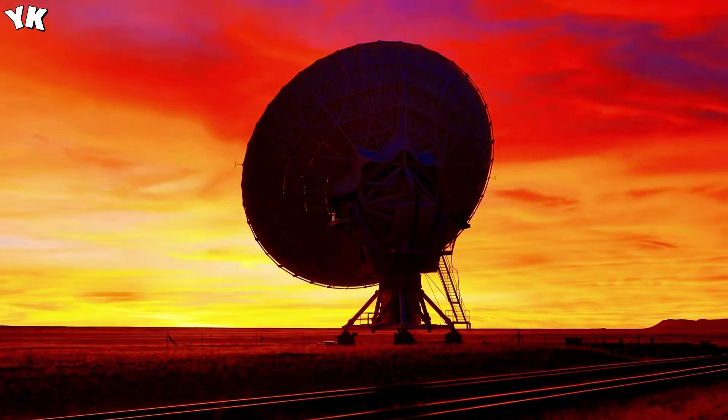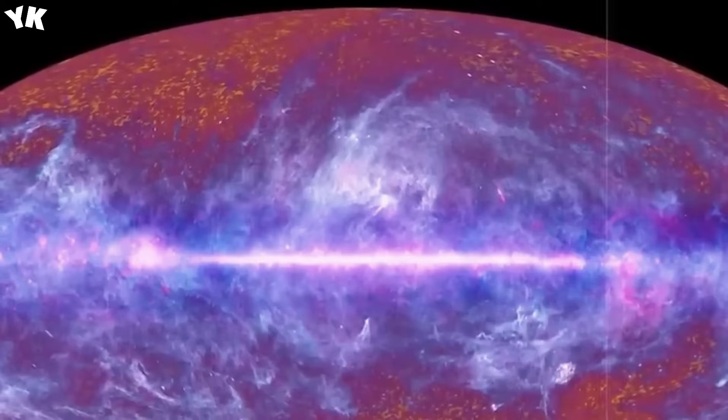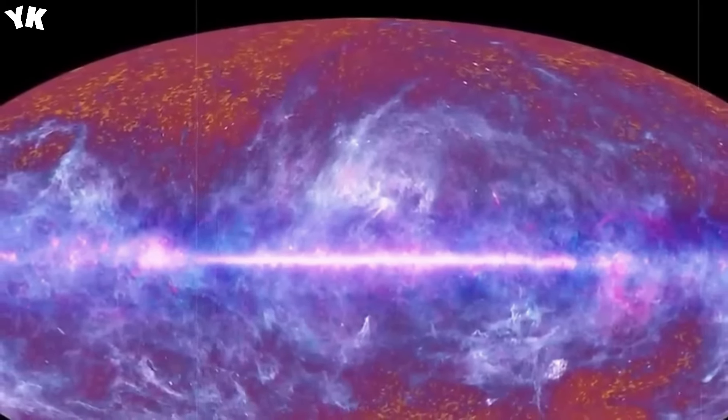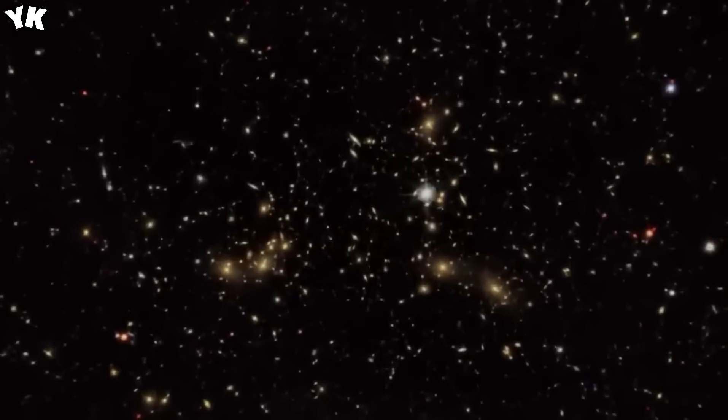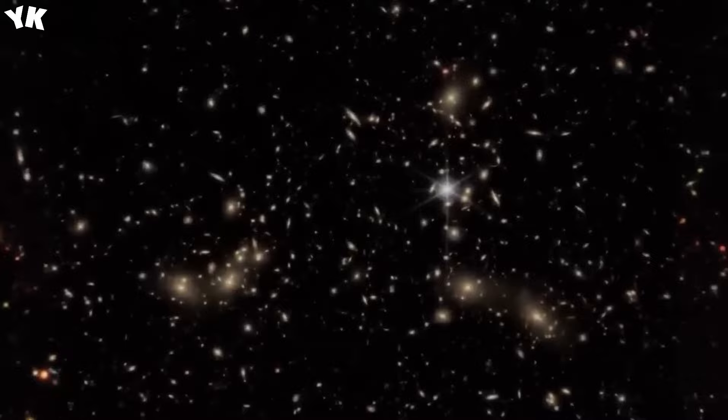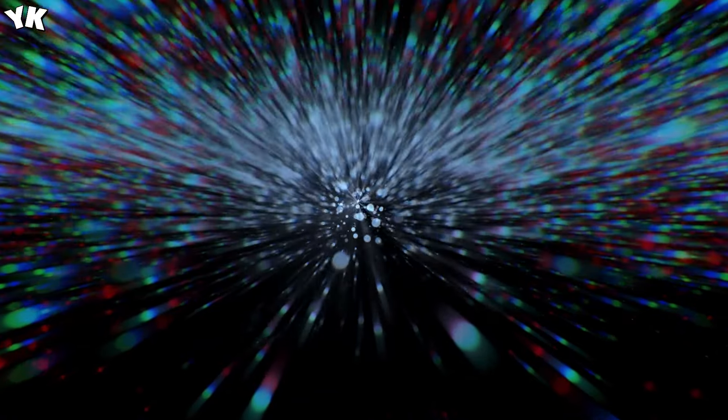This enigmatic image was shared on Twitter by a citizen scientist named Judy Schmidt, swiftly igniting a flurry of comments and bewilderment within the online community. The featured star, known as WR140, stood surrounded by regular ripple-like circles that gradually dissipated into the cosmic abyss.